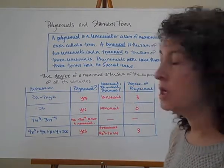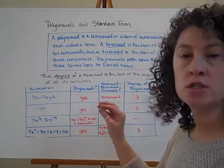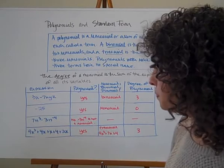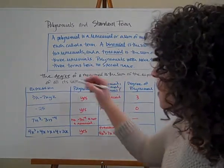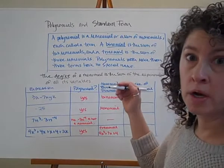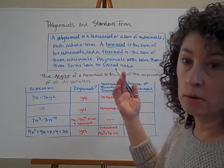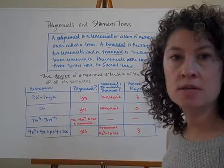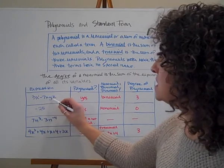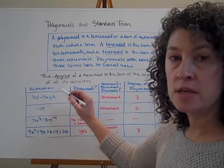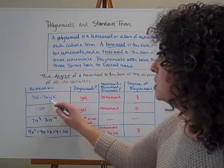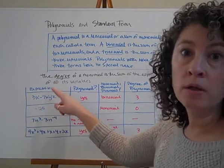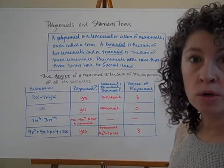Now for the degree: we look for the largest degree among the monomials. For 3x, the constant has a power of zero, but x has an exponent of 1, so 3x has a degree of 1. For 7xyz, each variable has an exponent of 1, so together this monomial has a degree of 3. Since 3 is the largest degree, the degree of this polynomial is 3. This is a third-degree polynomial.